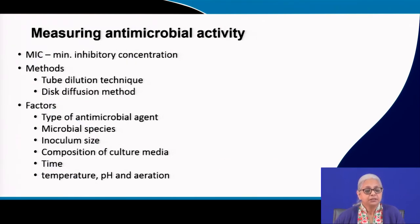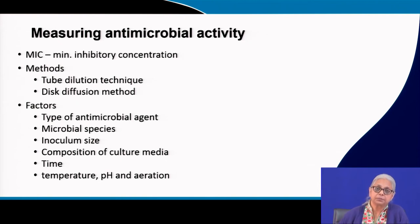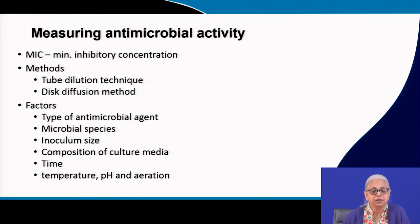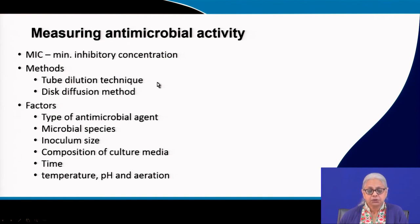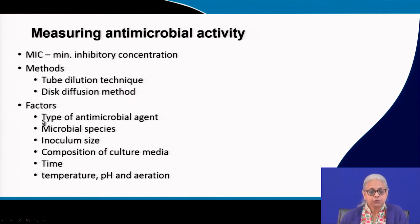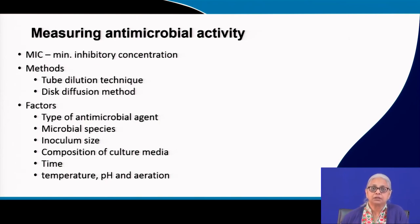When measuring antimicrobial activity, we need to find the minimum inhibitory concentration (MIC). There are two methods: tube dilution and the disc diffusion method. Several factors impact the results: the type of antimicrobial agent, microbial species, inoculum size, the nature of the culture media, time, temperature, pH, and aeration all have an impact on the result.